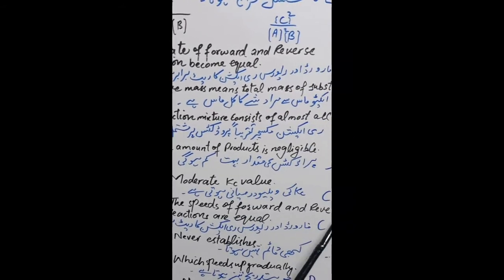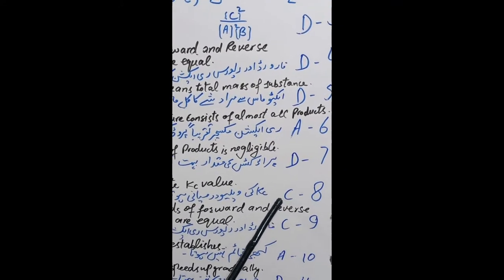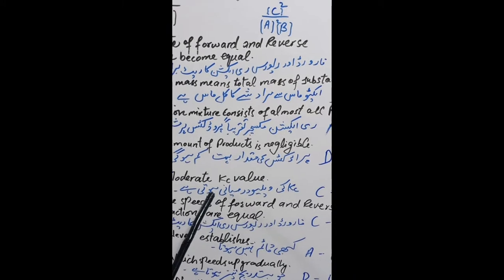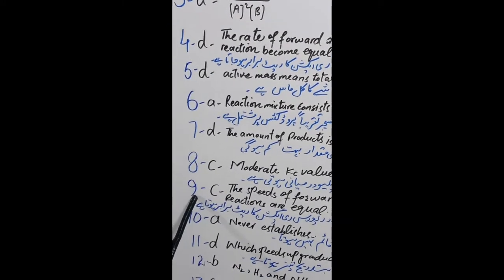Question 8: C. Moderate KC value. Answer C. KC ki value darmiyaan hoti hai.